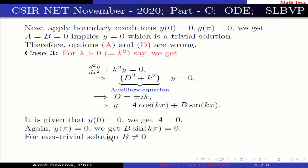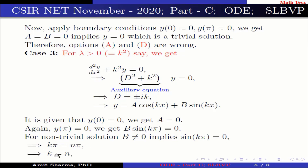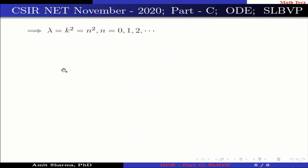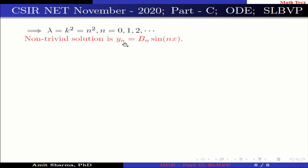For a non-trivial solution, b cannot be 0, so sin(kπ) = 0, which implies kπ = nπ, giving k = n. Therefore λ = k² = n², where n = 0, 1, 2, … and so on. The non-trivial solution is yₙ = bₙ sin(nx).